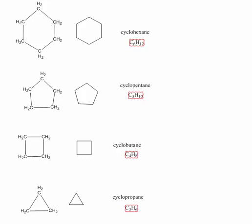There's cyclohexane which has six carbons, cyclopentane, five carbons, cyclobutane, four, cyclopropane, three.